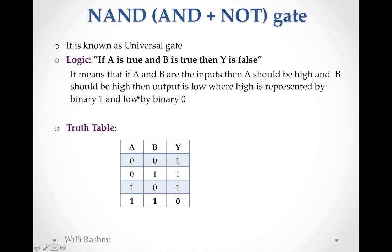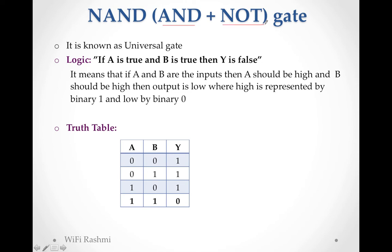Next is NAND gate. According to the name it is a combination of AND and NOT gate. It is also a universal gate. Both NAND and NOR are universal gates - by using NAND or NOR you can get back all other gates, whatever gate you want to create.